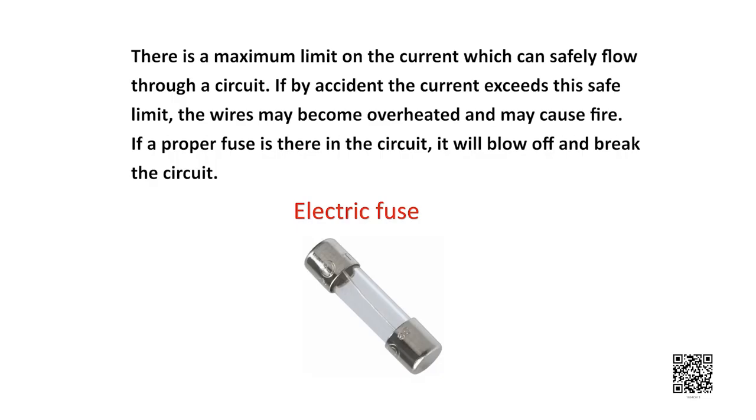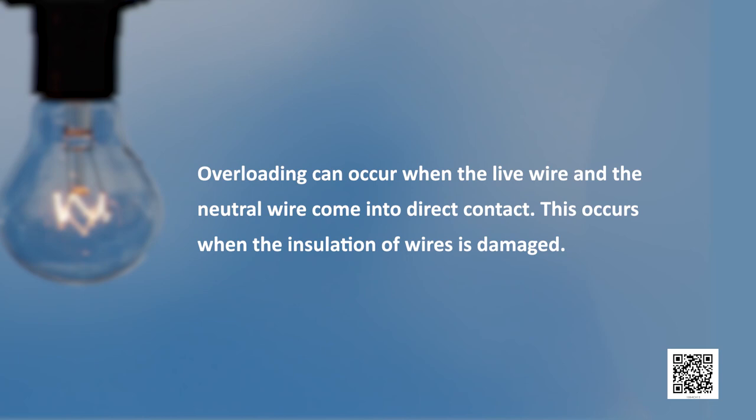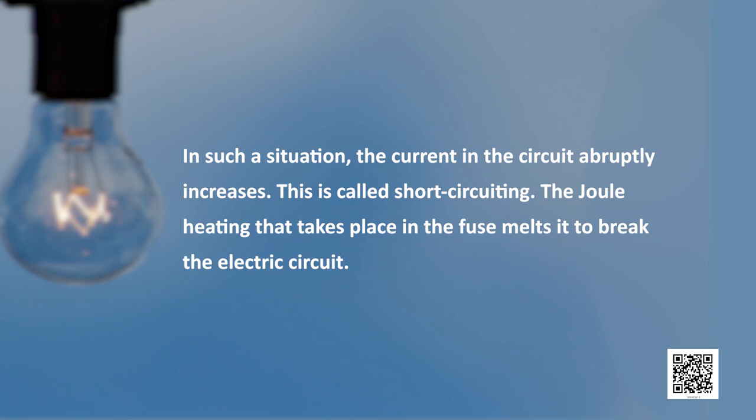In every circuit there is something called electric fuse. Now a fuse in a circuit prevents damage to the appliances and the circuit due to overloading. Now you must be wondering what is overloading. Overloading can occur when the live wire and the neutral wire come into direct contact. This occurs when the insulation of the wire gets damaged. In such a situation the current in the circuit abruptly increases and this is called short circuiting. The joule heating that takes place in the fuse melts it to break the electric circuit.